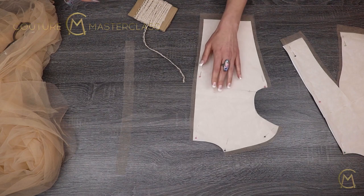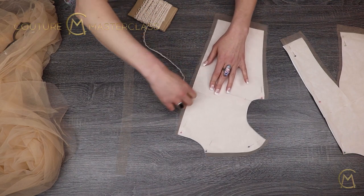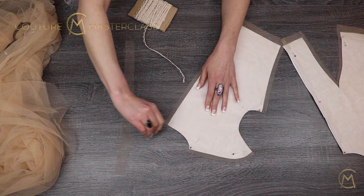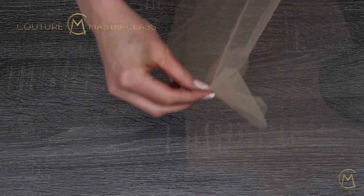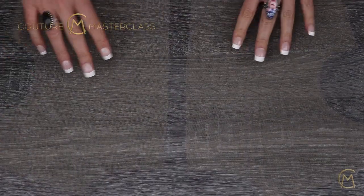So here are our two back pieces. Since we are going to use buttons and not a zipper, we are going to be using this loop tape on one side and this stripe on the other side.